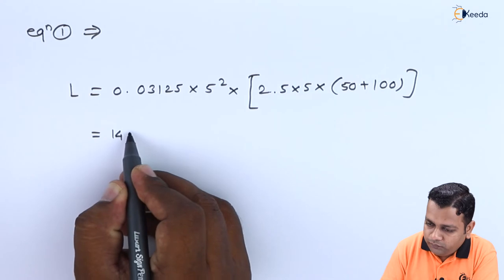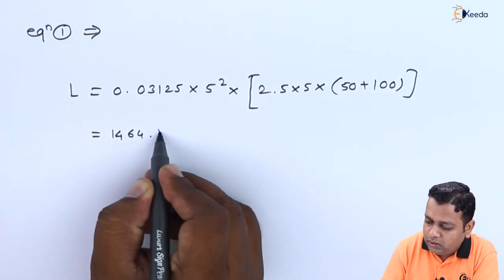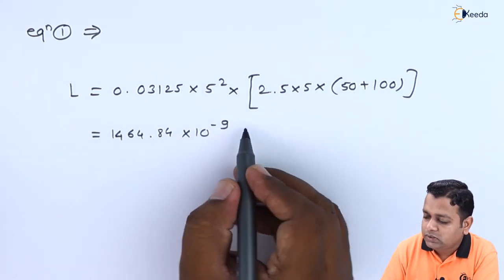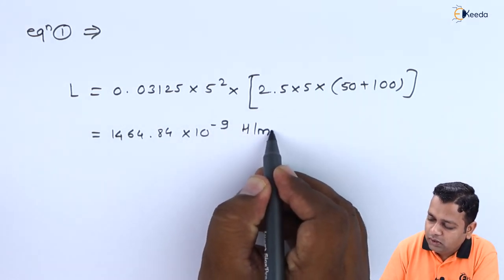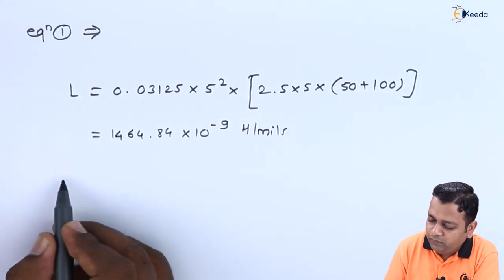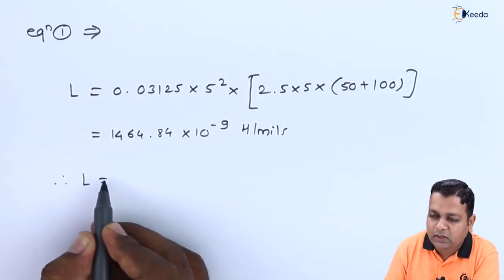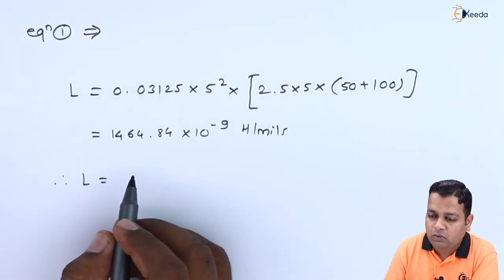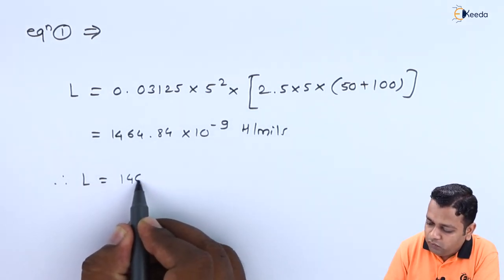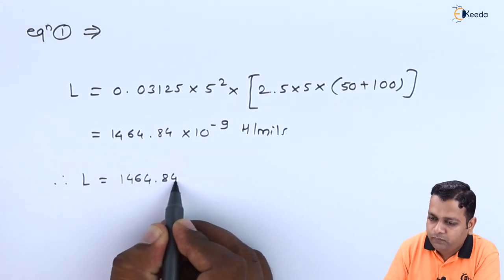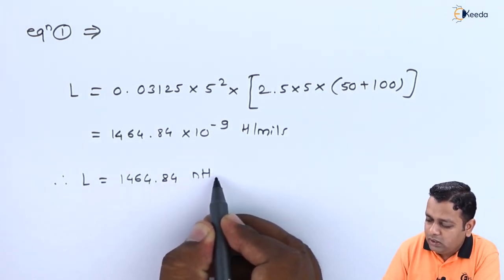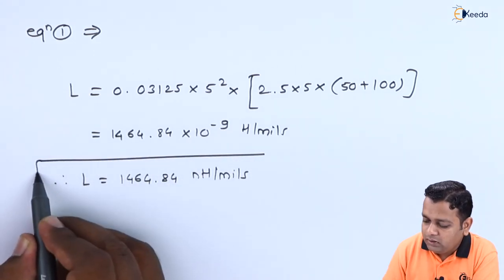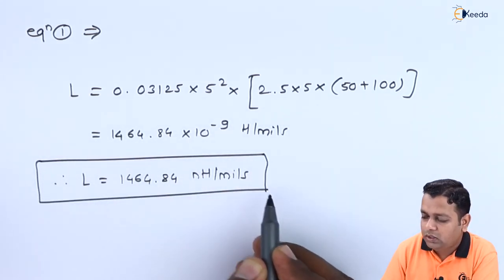Therefore, we express the inductance value for the circular spiral inductor obtained as 1464.84 nanohenrys per mil. So here we outline the determined value for the inductance.